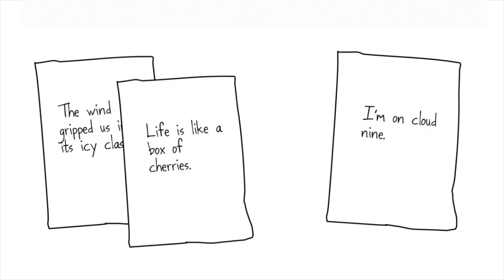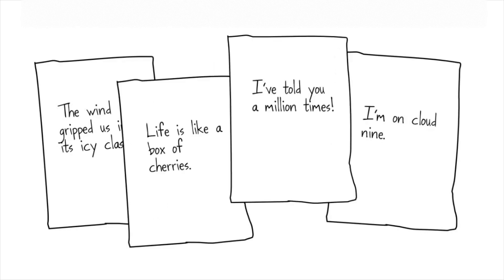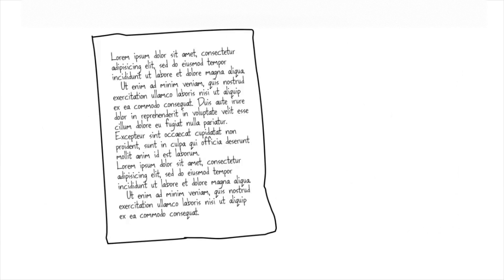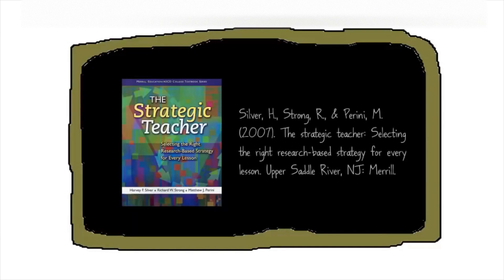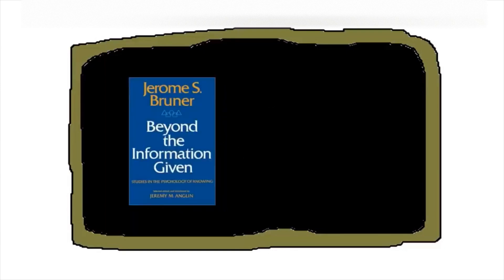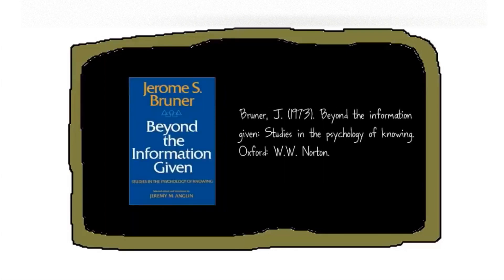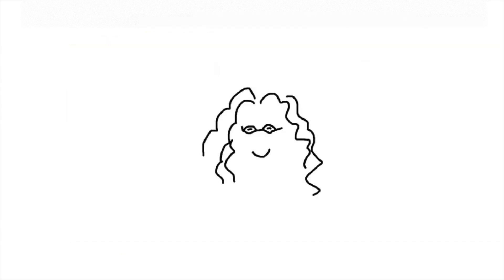This can be something really simple, like having students come up with new examples of figurative language. Or, if they're currently working on a piece of writing, ask them to go into their drafts and find three places to add figurative language. That's concept attainment. I learned the steps of this strategy from Silver, Strong, and Perini's book The Strategic Teacher. The concept attainment strategy is based largely on the work of Jerome Bruner in his book Beyond the Information Given. Happy teaching!